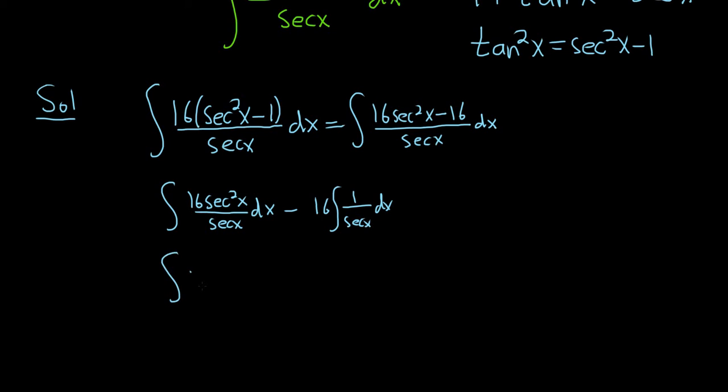This is 16 times the secant of x dx minus 16. And then 1 over secant is cosine, because secant is 1 over cosine. So this is cosine x dx. Very nice.